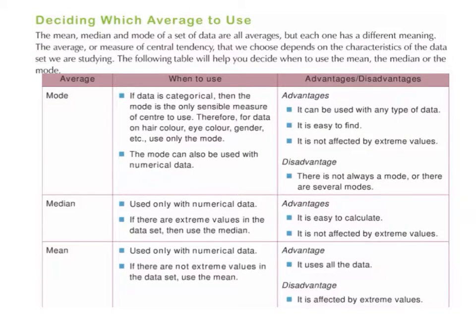This table is very important because often in Junior Cert and Leaving Cert questions we are asked which average would you use and why, and you need to be able to explain why. So let's start with the mode. When should we use the mode?